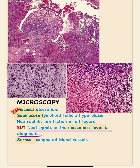In the mucosa, there can be ulceration with areas of hemorrhage and some necrosis. In the submucosa, there are lymphoid infiltrates, and lymphoid follicles may show hyperplasia. The serosa shows congested and dilated blood vessels. These are the key microscopic points to remember for acute appendicitis.